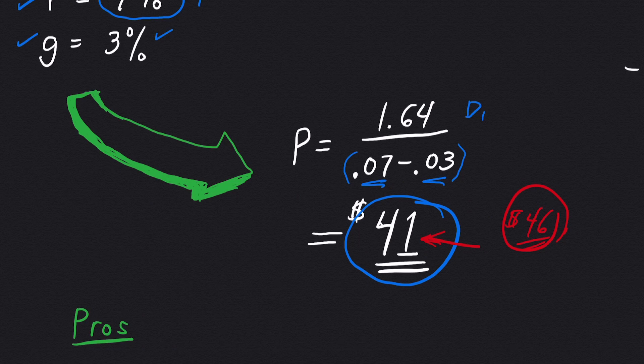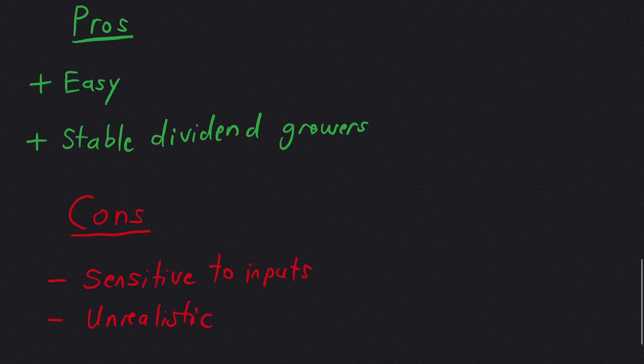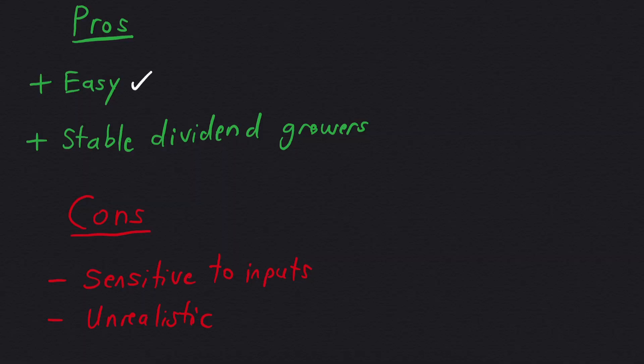So let's talk real quick about the pros and cons of this formula. One of the obvious pros is that this is a very easy way to value a stock. It's also really good for stable dividend growers like Coca-Cola and Procter & Gamble, Johnson & Johnson, companies like that that have a steady payout and they've grown their dividend consistently through time.